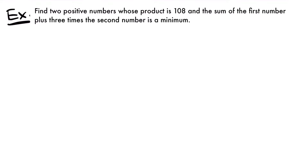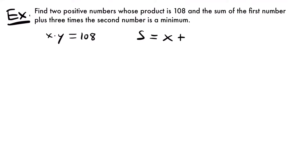So what we know here is that we're going to be looking for two different values — two positive numbers whose product is 108. For our first equation, we know that the product of two numbers, let's say x and y, is equal to 108. We also know that the sum of the first number plus three times the second is a minimum. So we'll make x our first number and y our second, and the sum S will be equal to x plus three times y.